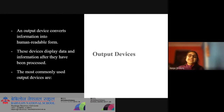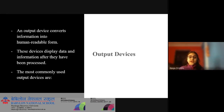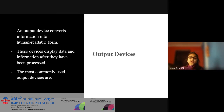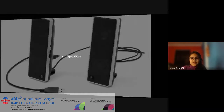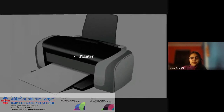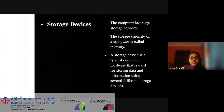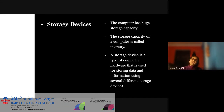Output devices. An output device converts information into human-readable form. These devices display data and information after they have been processed. The most commonly used output devices are monitor, speaker, and printer.